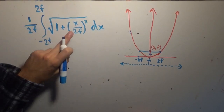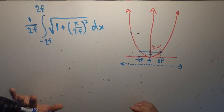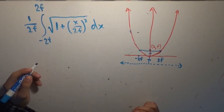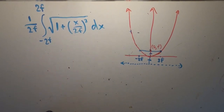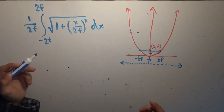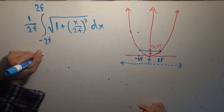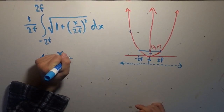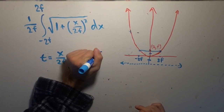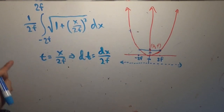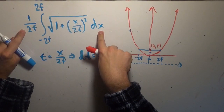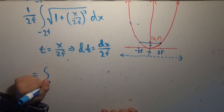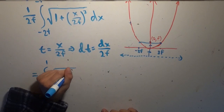There's definitely going to be a fantastic substitution to simplify things. Let t equal x over 2f, which implies dt equals dx over 2f. This is very convenient because all the 2f's disappear — we replace x over 2f with t, the bounds become negative 1 to 1, and dx over 2f is already in the integral. So the integral reduces to the integral from negative 1 to 1 of the square root of 1 plus t squared dt, which looks deceptively simple.